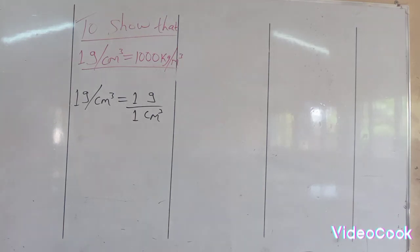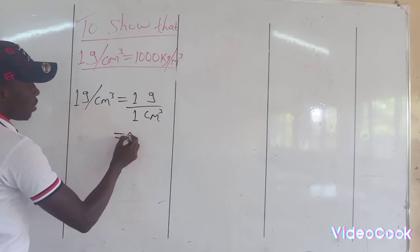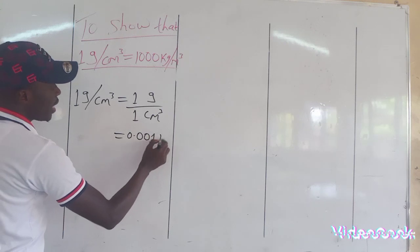If we convert 1 gram into kilogram, this means 0.001 kilogram.